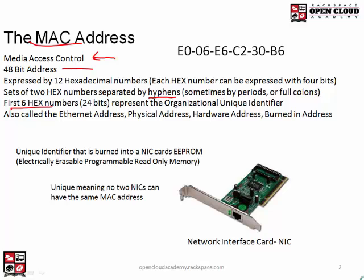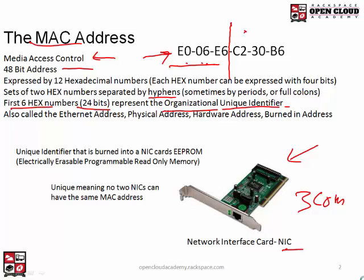The first 6 hex numbers, or the first 24 bits, represent the Organizational Unique Identifier. These first 6 hex numbers are the manufacturer of the device itself. This is a NIC card that has a MAC address programmed into it. Let's just say that 3Com made this card — these first 6 numbers would represent the manufacturer.